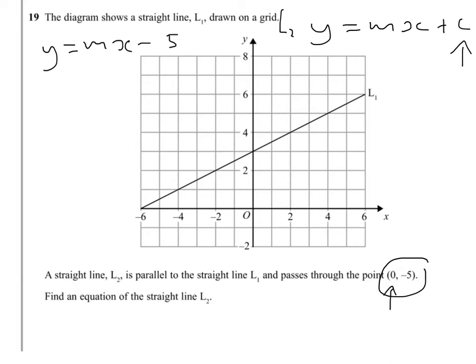The second part is to use the information about the fact that L2 is parallel to line L1. This will mean that it has the same gradient. So if we can work out the gradient of L1, this will be the gradient or the value of m for L2.